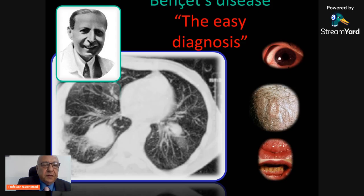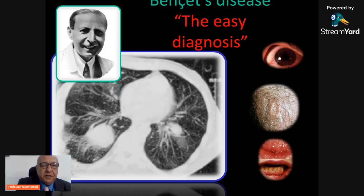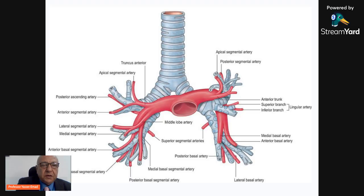Behçet disease is always easier to diagnose because if the patient has the classic triad of Behçet disease and then suddenly develops pulmonary manifestations, the physician usually goes directly to the diagnosis of pulmonary complication — notably pulmonary artery aneurysm — and establishes the diagnosis. Pulmonary embolism would not be a probable diagnosis in such a case, especially if the patient is known to have Behçet disease by the classic triad.